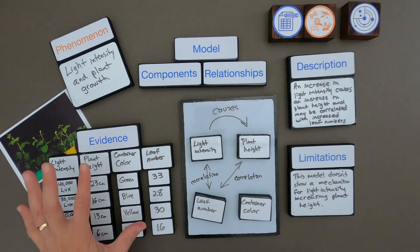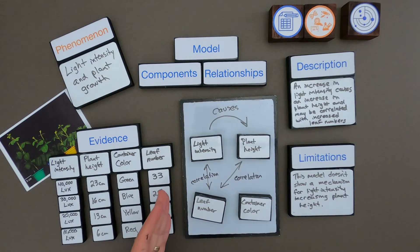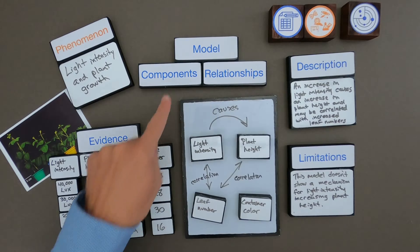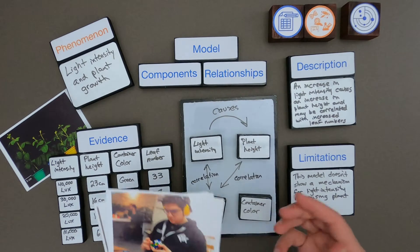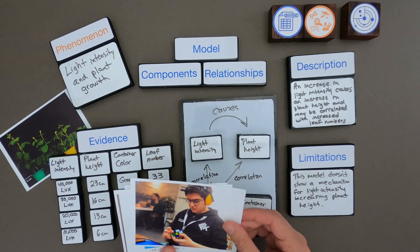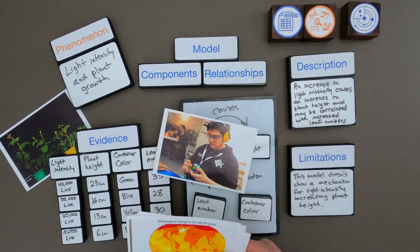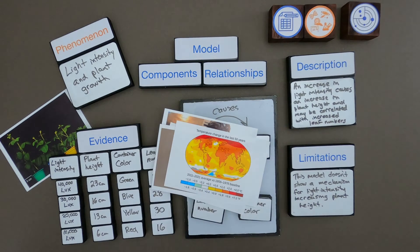For the description: an increase in light intensity causes an increase in plant height and may be correlated with increased leaf numbers. For the limitation: my model does show there's a cause between increased light intensity and plant height, but it doesn't show any kind of mechanism for how that might occur. Always look for the patterns first, then the relationships, and use those as your components to identify relationships. Below there are some slides where you could look at data from speedcubing results or even climate change. That's how you use evidence to develop models of complex systems.